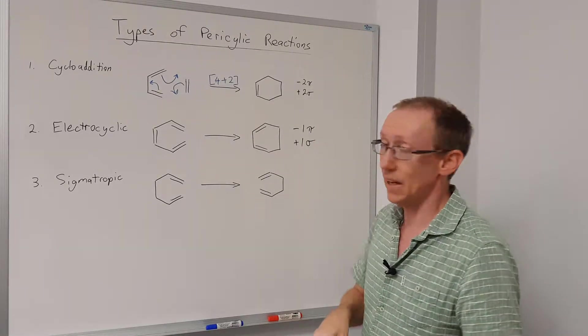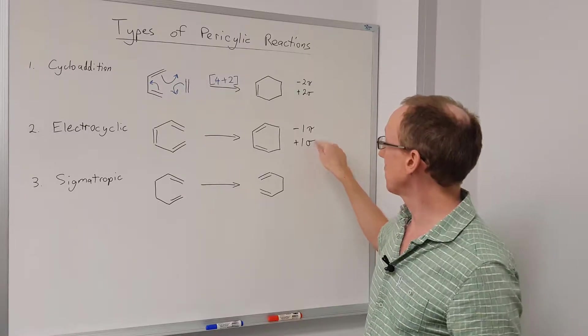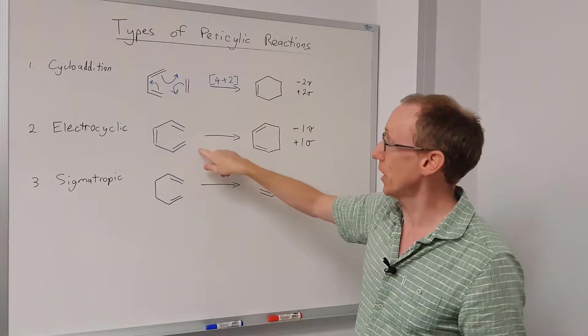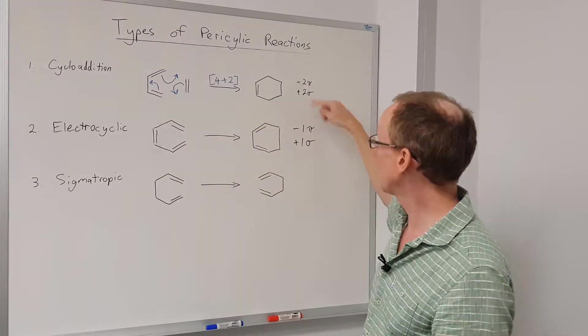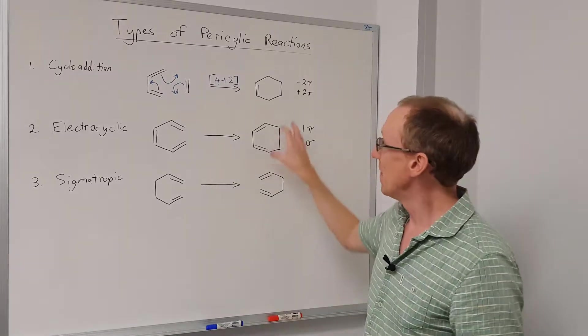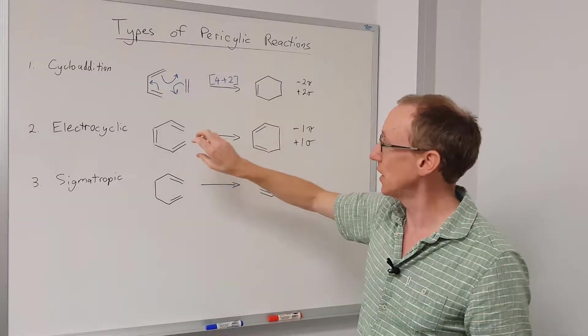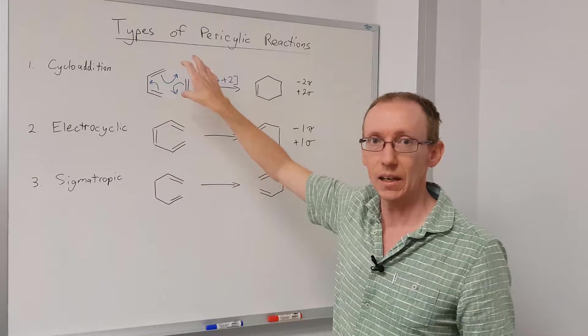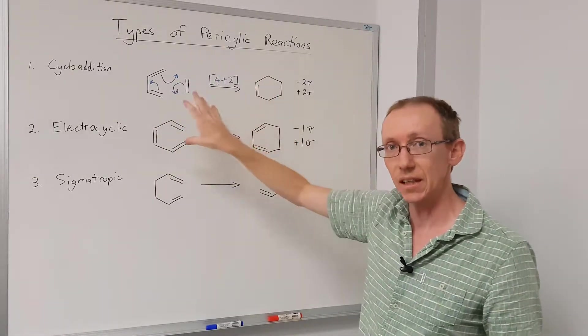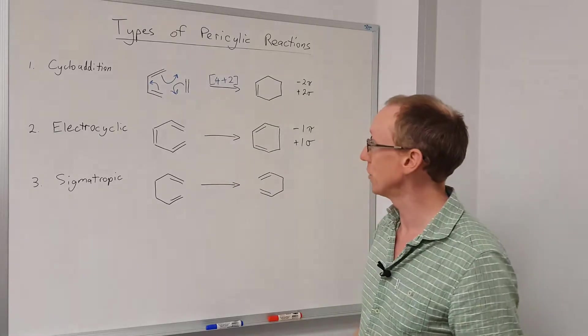But as another general rule, we would expect that there may not be as much of an energetic benefit in doing this type of reaction compared to a cycloaddition, because we've got only one extra sigma bond being formed. These are all very substrate-specific, so we need to look at all the factors involved in the structure of the starting materials and the products to see exactly how favorable these reactions would be.